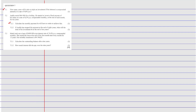Let's do the first question. It says: how many years will it take to triple an investment if the interest is compounded annually at a rate of 9.8%? So we know that it's compounded interest, meaning the formula we need to use is A equals P times (1 plus i divided by M) to the power N multiplied by M.